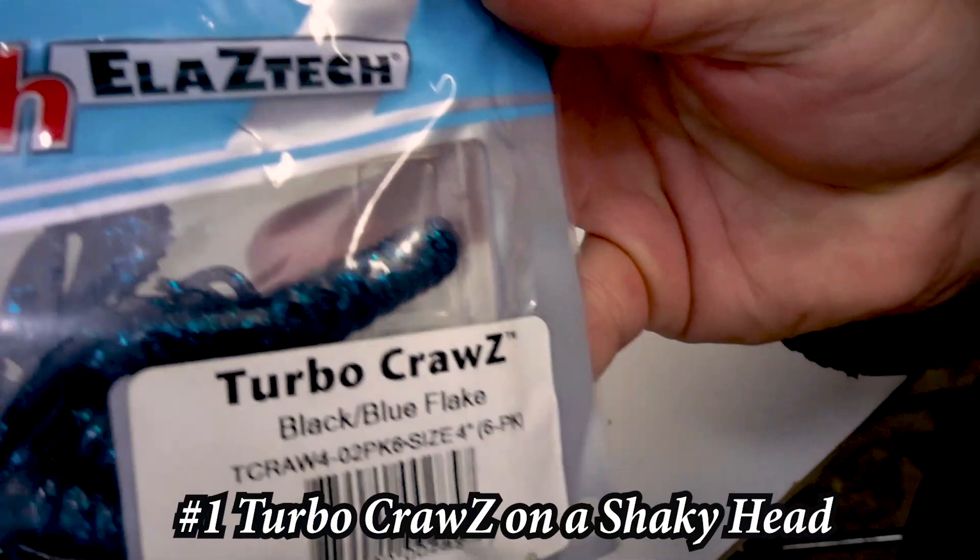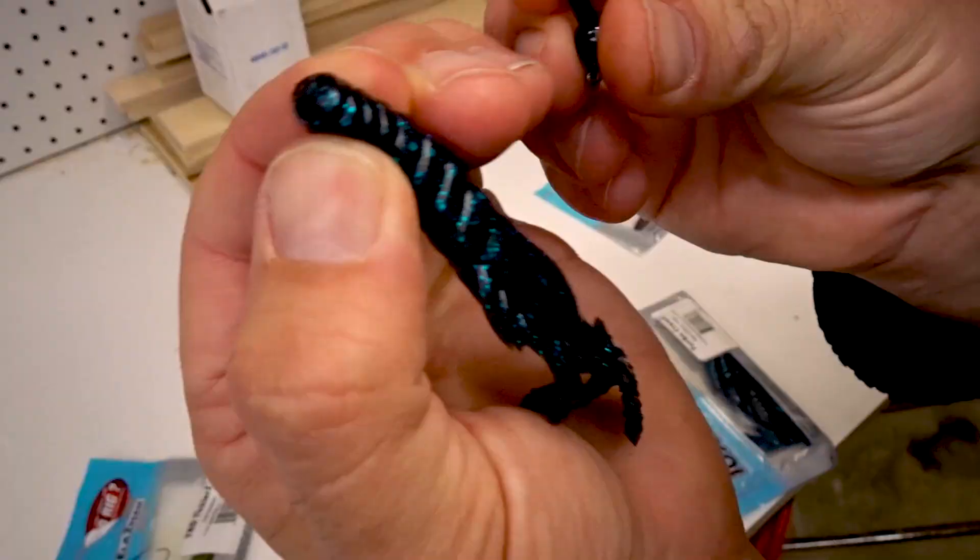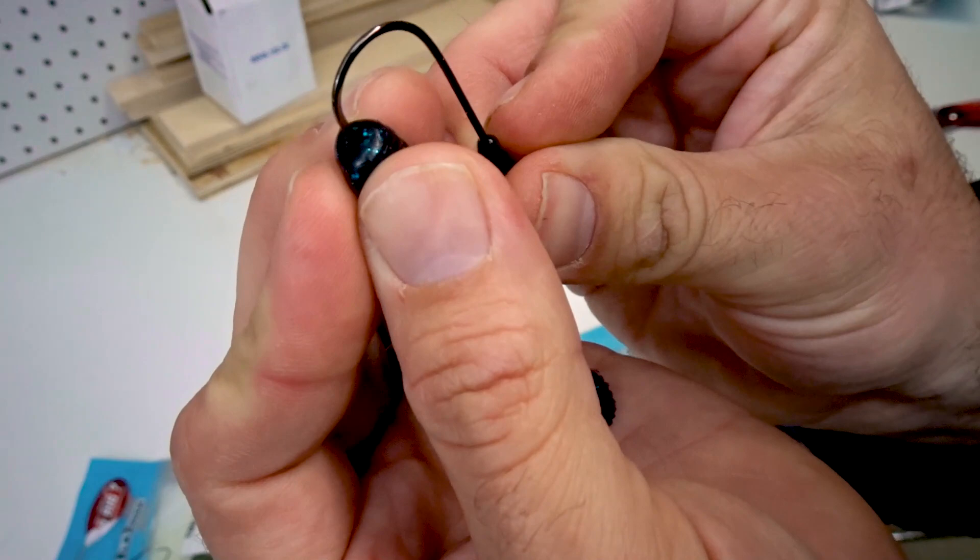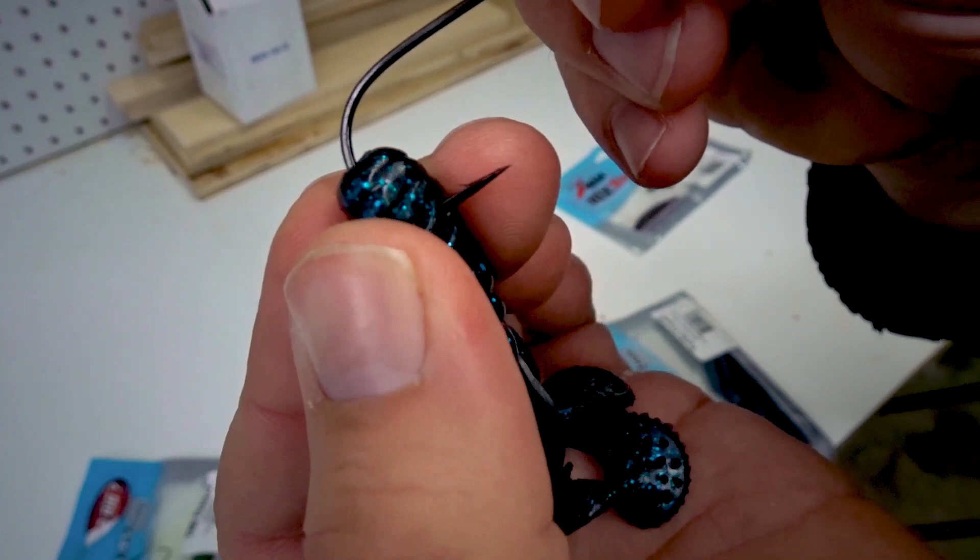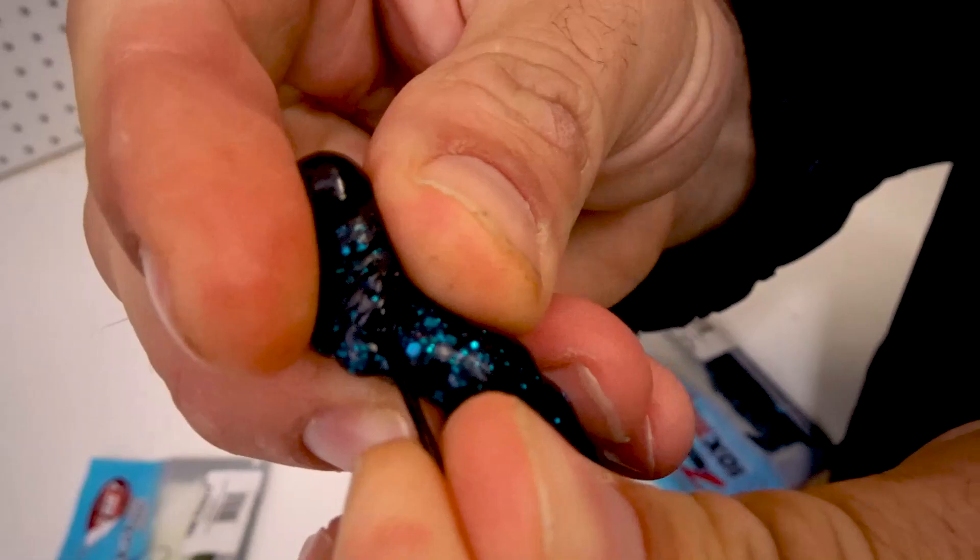Number one, we're using the turbo crawl Z on a shaky head. Insert the hook into the top of the tail with the bait facing away from the jig head. Once you get it through there, push the bait up towards the jig head. With the elastic, it's very hard to push this up, but if you give it a good squeeze it'll get up there.